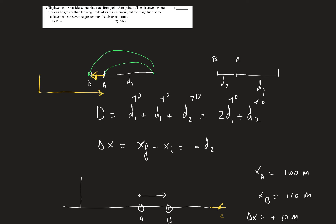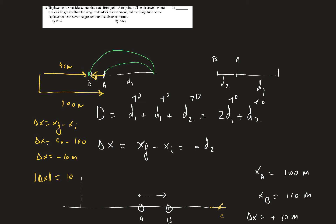Let's put numbers. Say point A is at 100 meters and point B is at 90 meters. The displacement is x-final minus x-initial, which is 90 minus 100, equal to minus 10 meters. The magnitude of the displacement is 10 meters. The displacement has direction (positive or negative), while the magnitude has no sign — it's always positive.